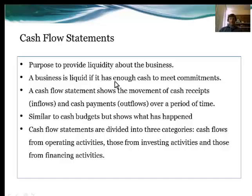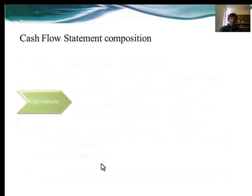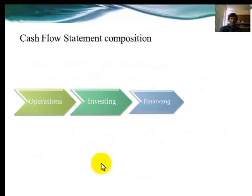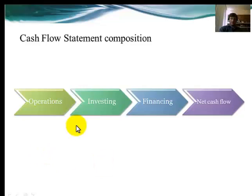Cash flow statements are divided into three categories: cash flow from operating activities, cash flow from investing activities, and cash flow from financing activities. There's an operations section, an investing section, a financing section, and all three sections are combined together in the net cash flow.